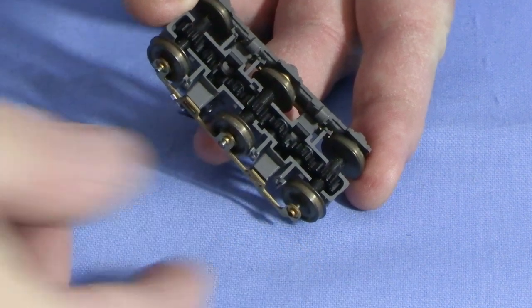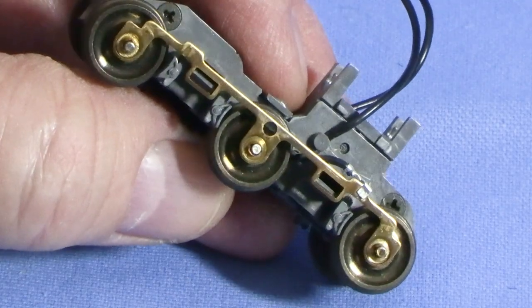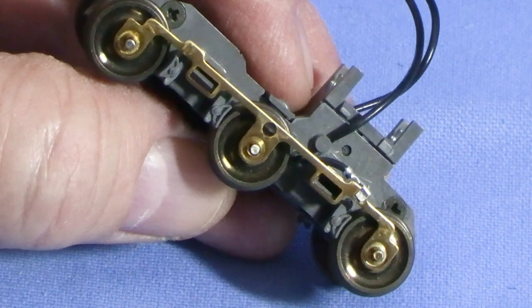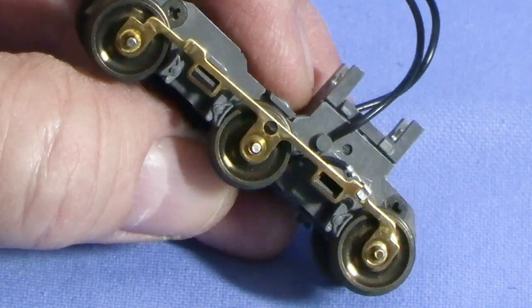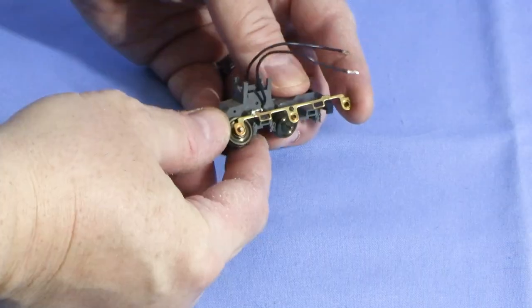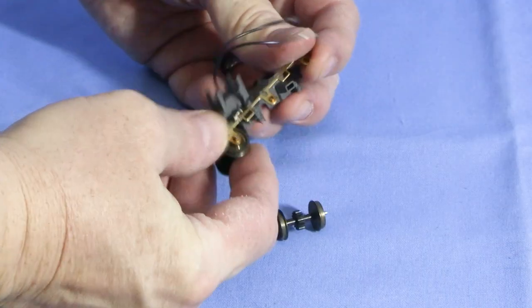With the cover loose, the side frames will pull off. Now we can get a better look at the copper strips that hold the axles. Make sure not to bend these, as it can throw the wheels out of alignment and cause derailments. I'll gently pull them off. Now the wheels should just fall out.